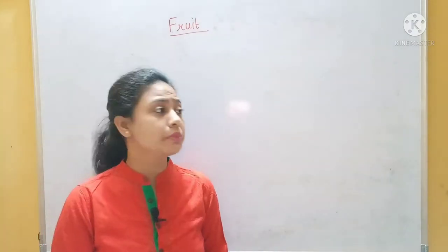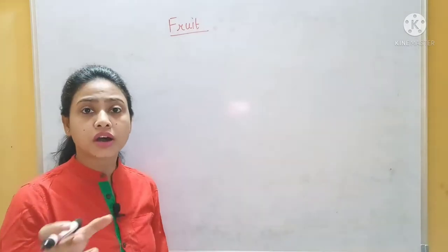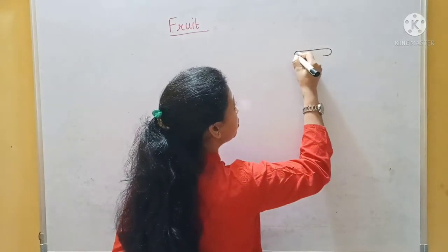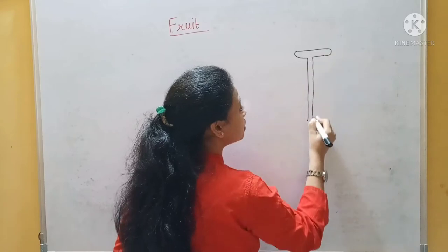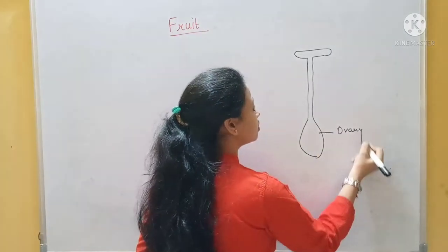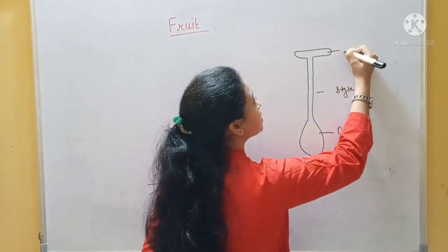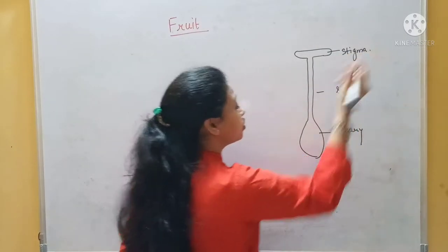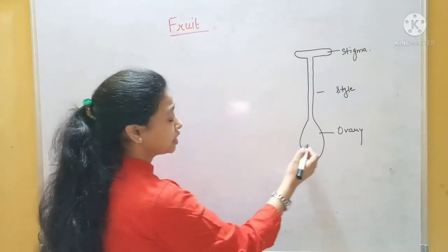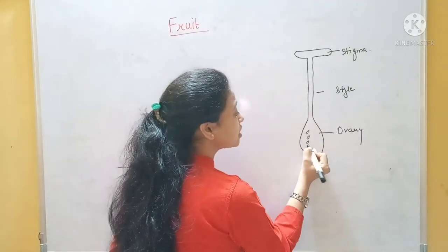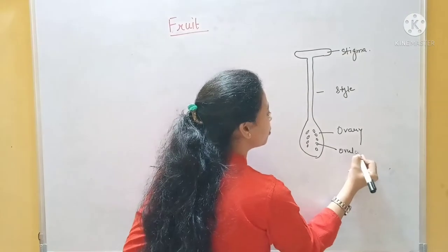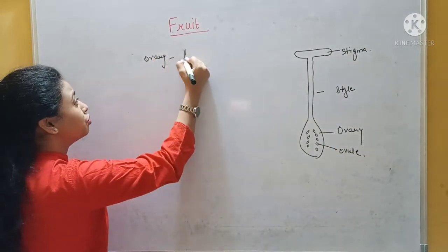There are many varieties of fruit. First we need to know which part of the plant is responsible for fruit formation. The whole female reproductive part — I am drawing the female part. This swelling part is called the ovary, this is the style, and this is the stigma. So this ovary, after converting, is called fruit. And inside this ovary there is a seed-like structure — it is not actually a seed, it is called an ovule. That means the ovary makes the fruit.